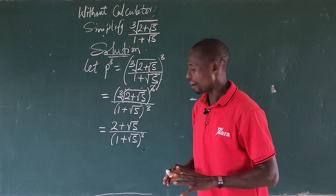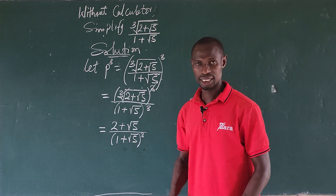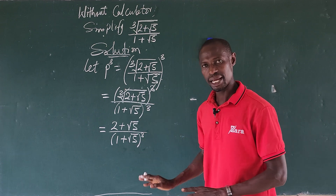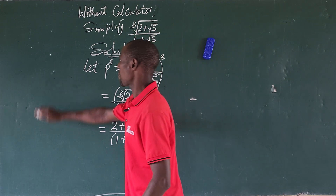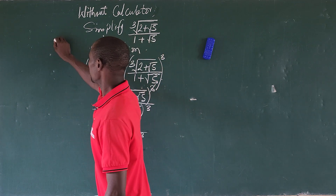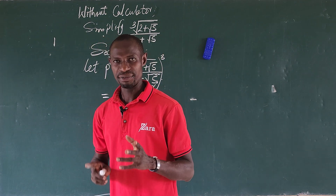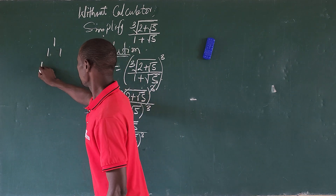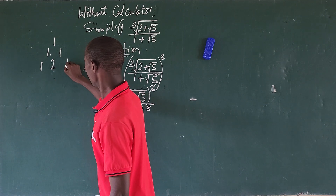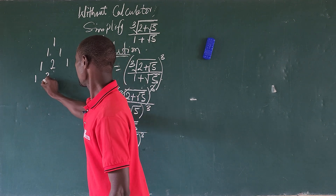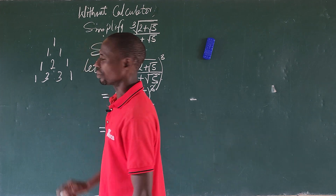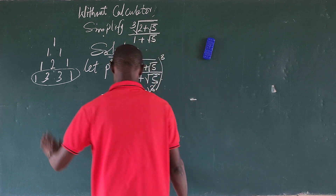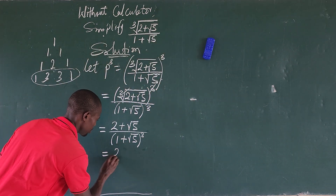We use the binomial expansion on the denominator. To get the coefficients of each term, we use Pascal's triangle. For the power of 3, the coefficients are: 1, 3, 3, 1. So we use these to expand (1 + √5)³.